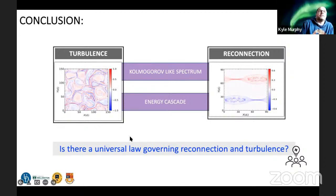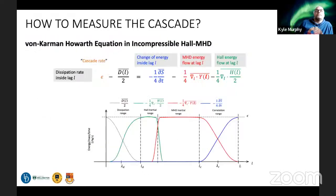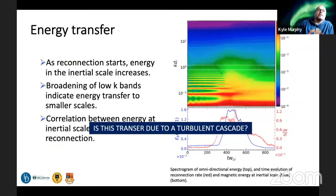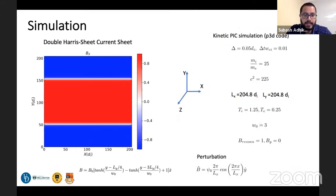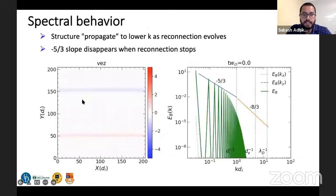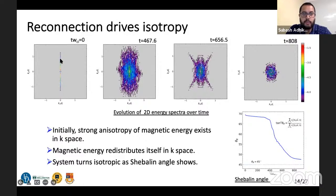Thank you, Subhash, for a wonderful talk. We have a question from Lund regarding slide 14: which direction does the magnetic field point in the simulation? The reconnecting field is along the x direction, and it is a function of y. So at t=0, the energy is because of the variation in y, which is why all energy appears along the y modes. As the system evolves, significant out-of-plane magnetic field develops, distributing the initially y-mode energy across different modes.